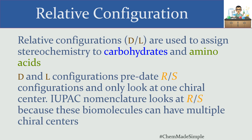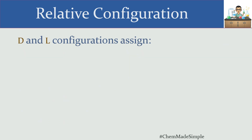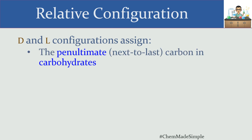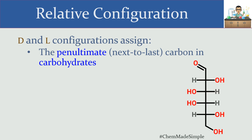R and S take a look at each individual chiral center and make adjustments as necessary. D and L configurations, specifically what they assign in carbohydrates, are based on the penultimate carbon — literally meaning next to last. So if we take a look at an example of a carbohydrate, here we have a six-carbon sugar.